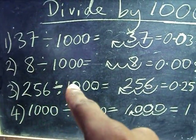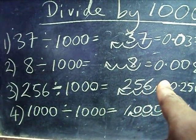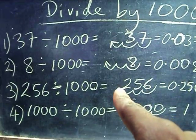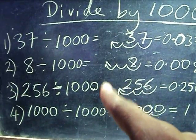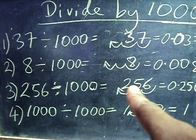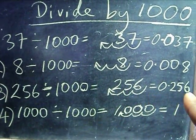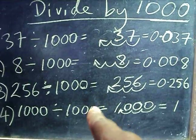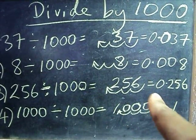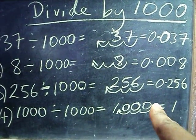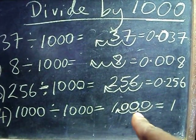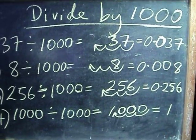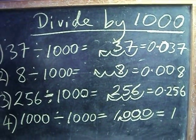256 divided by 1,000: you shift the point once, twice, three times, so the answer is 0.256. And 1,000 divided by 1,000: you shift the point three times — one, two, three — so the answer is 1.